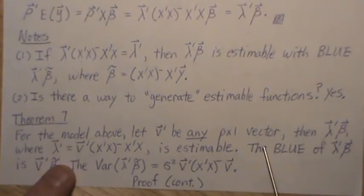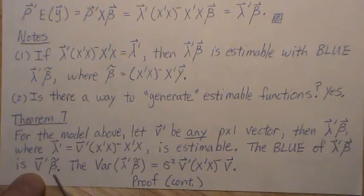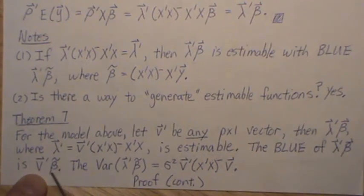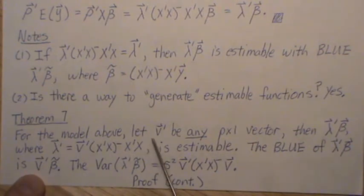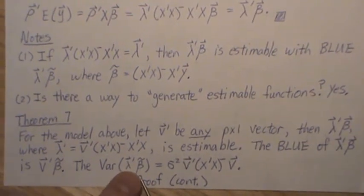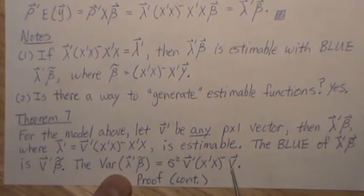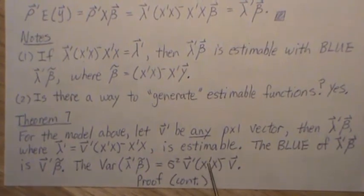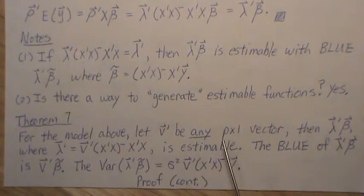Also, the blue of lambda prime beta is V times beta tilde, where beta tilde is the least squares estimate of beta, and V is this any vector we wanted. And also the variance of this blue is defined like this: sigma squared, V prime, X prime, X, generalized inverse V prime. This is so fascinating to me.